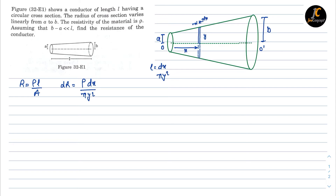Now Y is changing as we move from O to O dash — as X progresses, Y increases. So we will find the value of dy by dx. To get that relation, let's draw a line and call this angle theta. Let's say this is point P, this is point Q, and this is point R. In triangle P Q dash R dash, tan theta equals perpendicular upon base. The base is X.